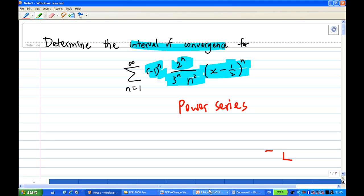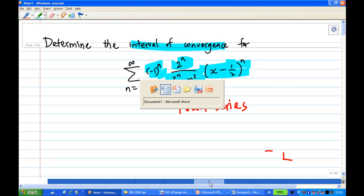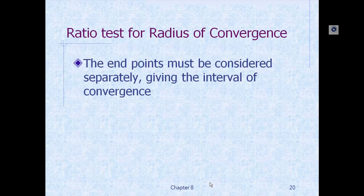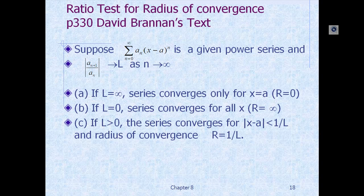The theory behind this is in the PowerPoint. You can find the ratio test for radius of convergence on page 330 of David Brandon's text, or any calculus text. It states: suppose you have a summation of a_n times (x - a)^n, a power series from n = 0 to infinity. Then look at the limit of the absolute value of a_{n+1} over a_n as n approaches infinity, and suppose this limit is L.